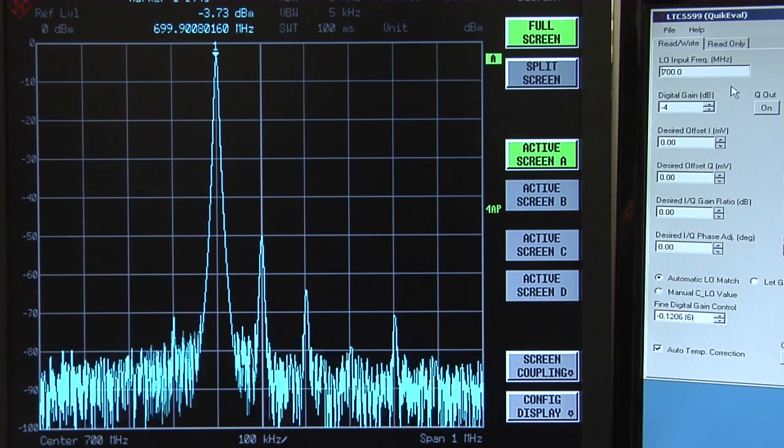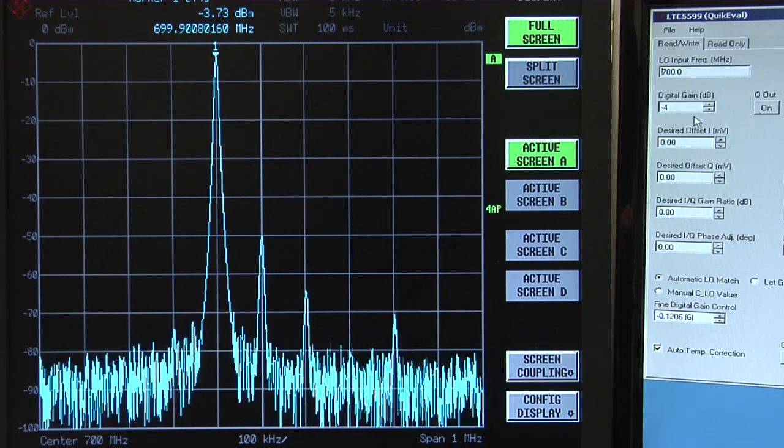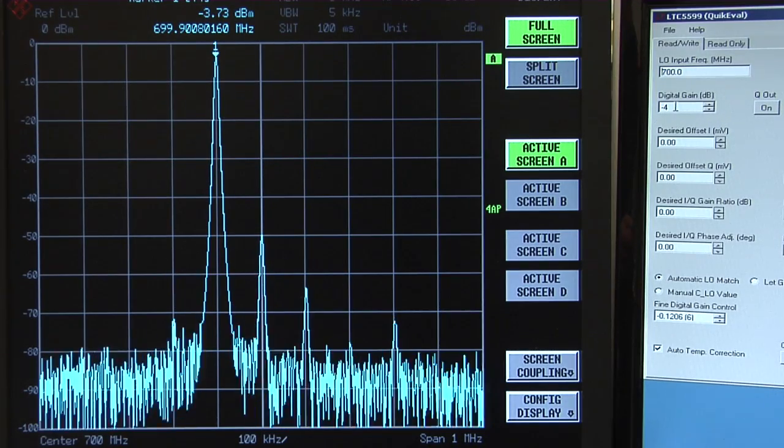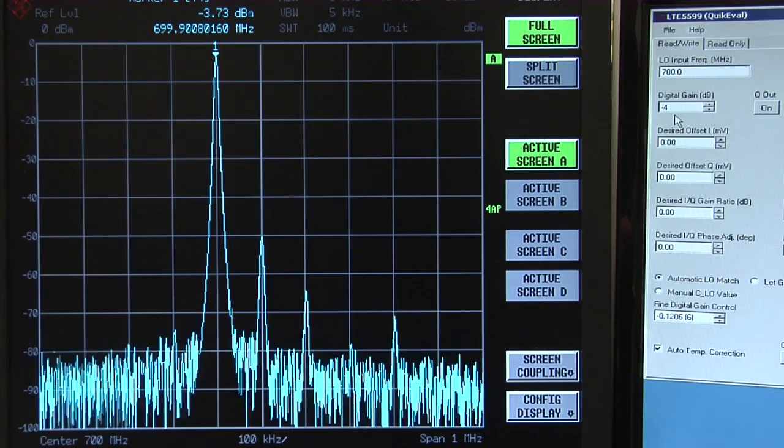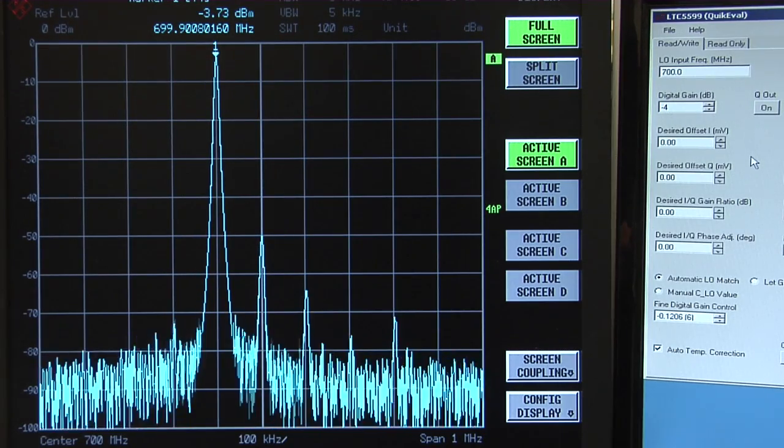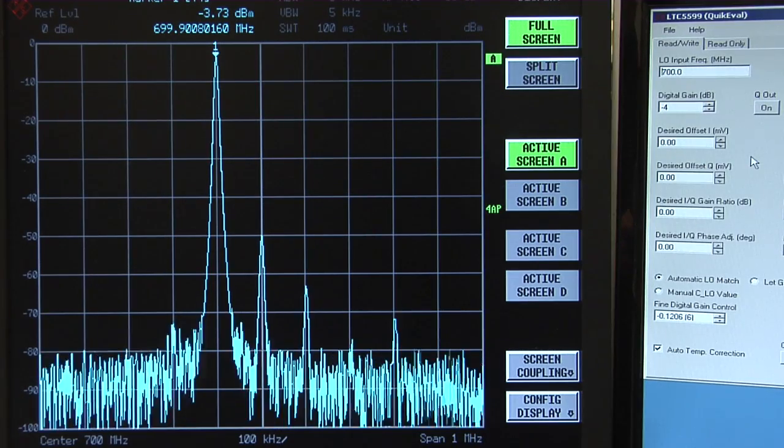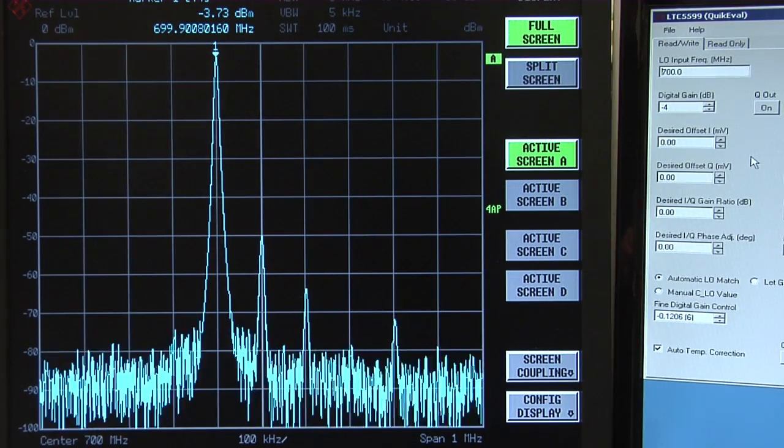Next, we set the digital gain register, which provides a coarse adjustment of voltage gain from 0 dB to minus 19 dB in 1 dB increments. The default value is minus 4 dB. That's probably okay for many applications, but you can adjust as needed.